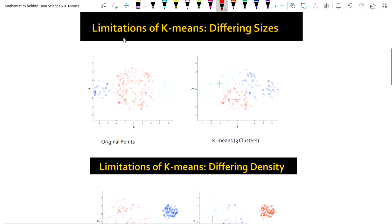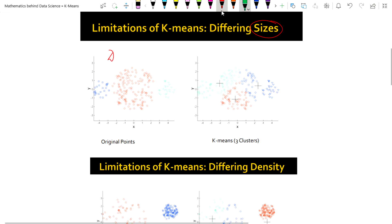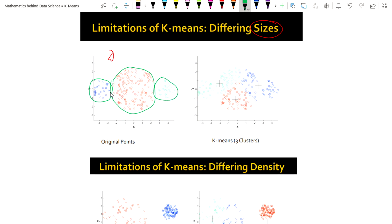Let's try to understand these limitations through examples. Here are the original data points. These limitations are mainly based on different sizes of clusters. If you show this data to anyone without any coloring or marking, they can easily conclude that this is one cluster, this is another cluster, this is another cluster, and this is another cluster.